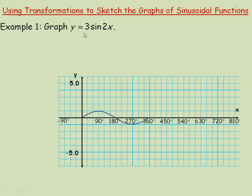In the first example, graphing y equals 3 sine 2x. The 3 allows us to find the amplitude, which is 3. So compared to the original sine function, which has an amplitude of 1, the graph we're going to draw will have an amplitude 3 times larger.